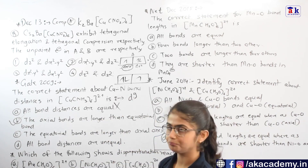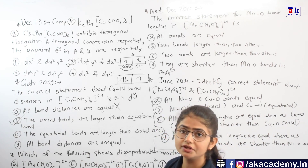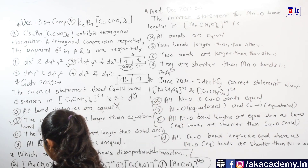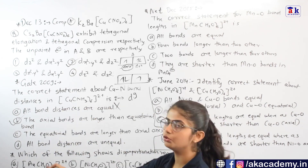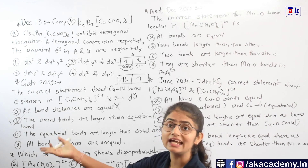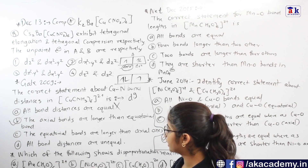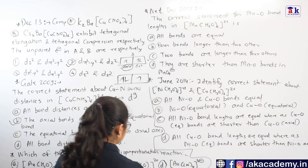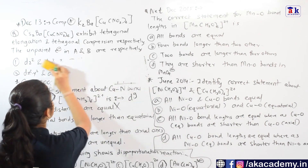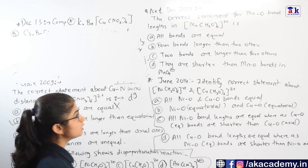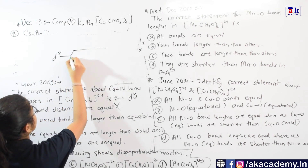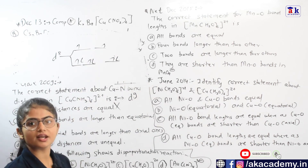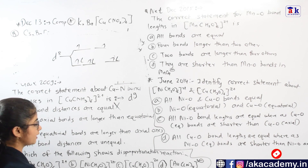The next question asks which of the following shows a disproportionation reaction. This was discussed in the consequences of JTD. The Au complex here has Au in the +2 state, which gives a d9 configuration, so it must exhibit JTD. The Ni complex has Ni in the +2 state giving d8 — the electron arrangement 1-2-3-4-5-6-7-8 is symmetrical, so there is no JTD for this complex.